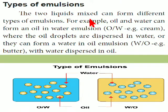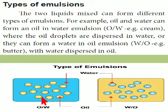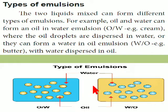Two liquids can mix together to form different types of emulsion. The first is oil in water emulsion — example: cream. The second is water in oil emulsion — example: butter. You can see the types of emulsion in the picture showing oil in water and water in oil. Emulsions are used in food processing, pharmaceutical, metallurgy, and other important industries.